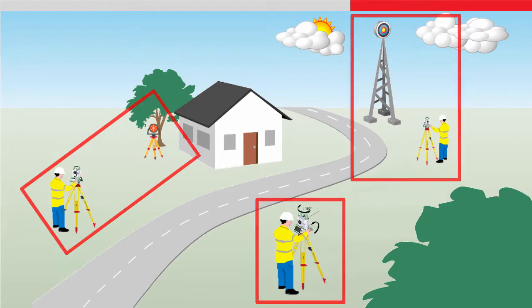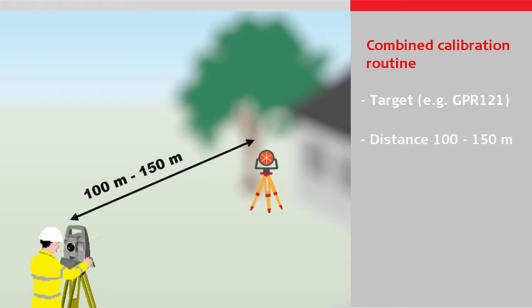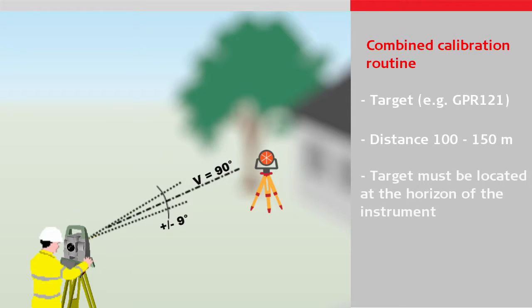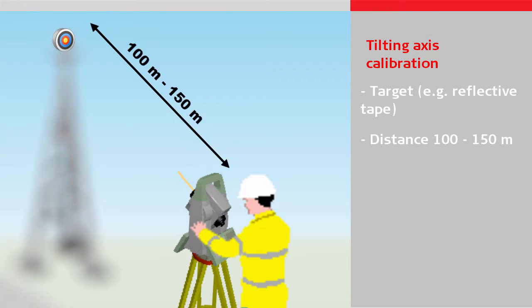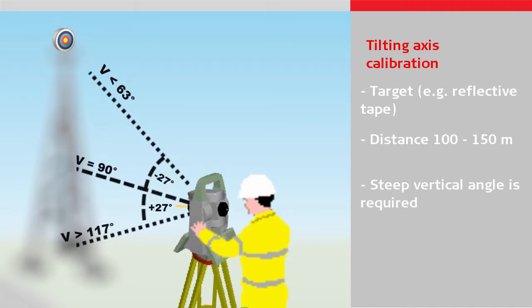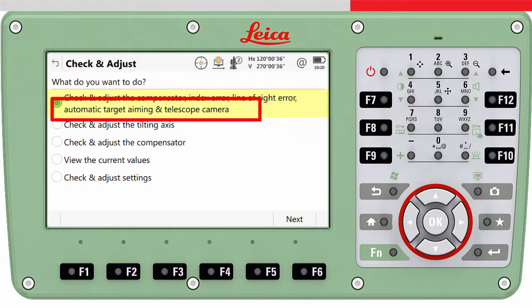It has to be considered that all three routines require different setups and different targets. The combined calibration routine requires a target at a distance of 100 to 150 meters, positioned less than plus or minus 9 degrees from the horizontal plane. The second routine requires a target at a similar distance, however it must be positioned at least 27 degrees above or below the horizontal plane. In addition to the typical instrument errors, the first combined calibration routine can also calibrate the automatic target aiming and the crosshair of the telescope camera if the total station is equipped with those features.